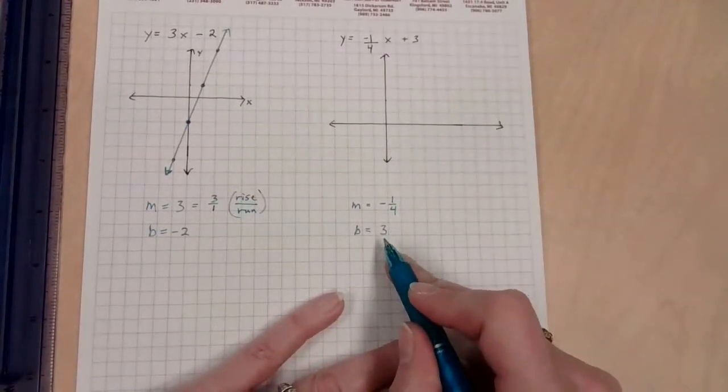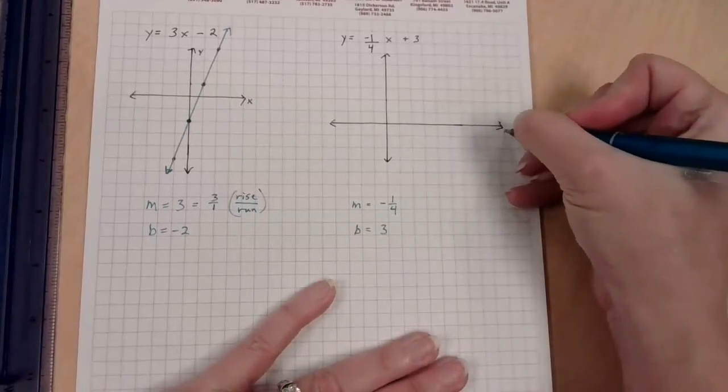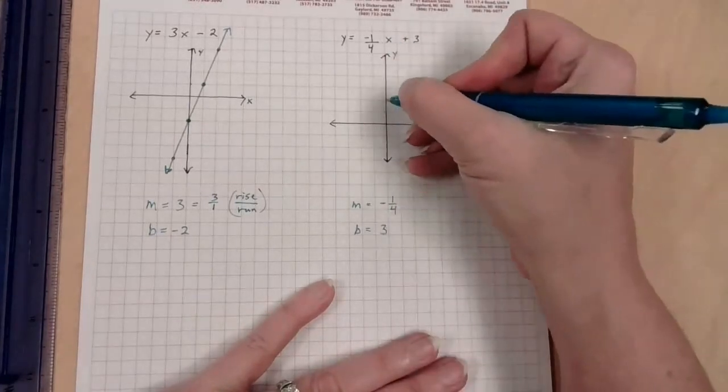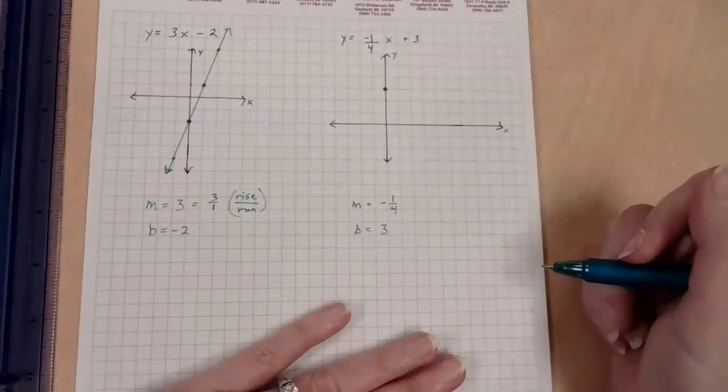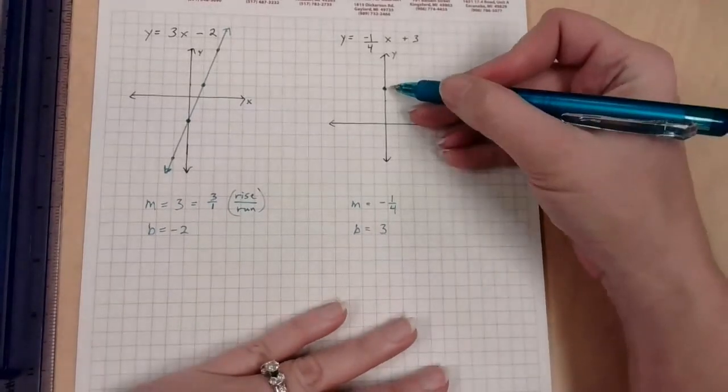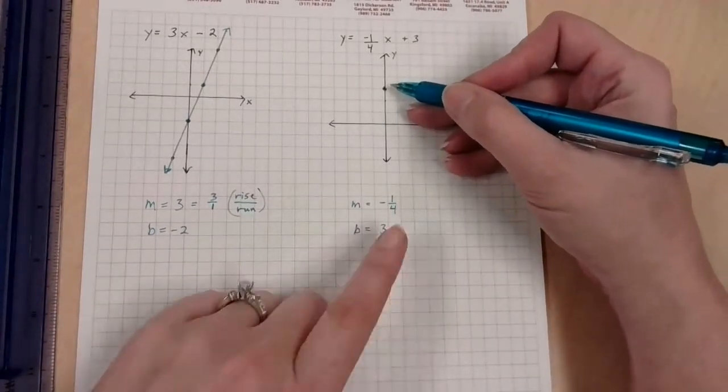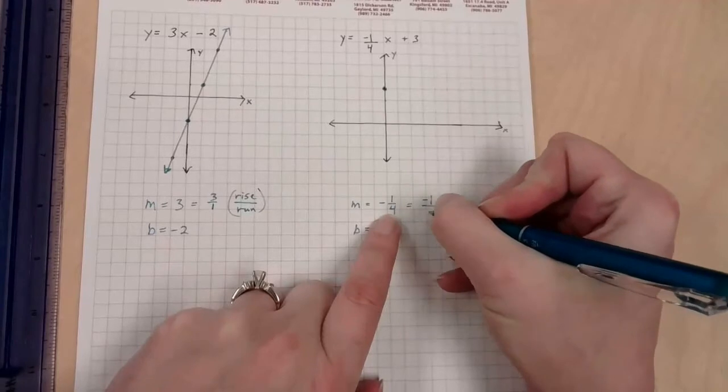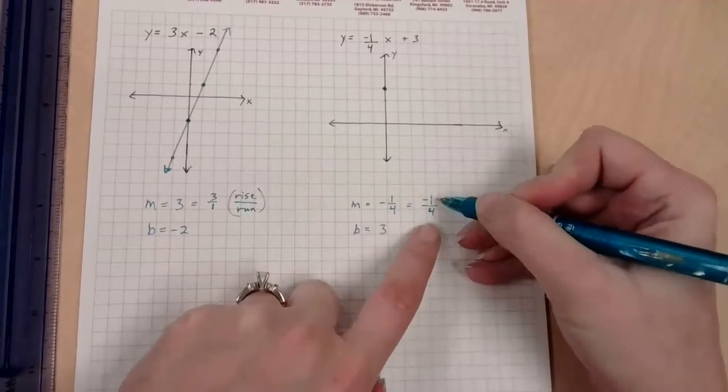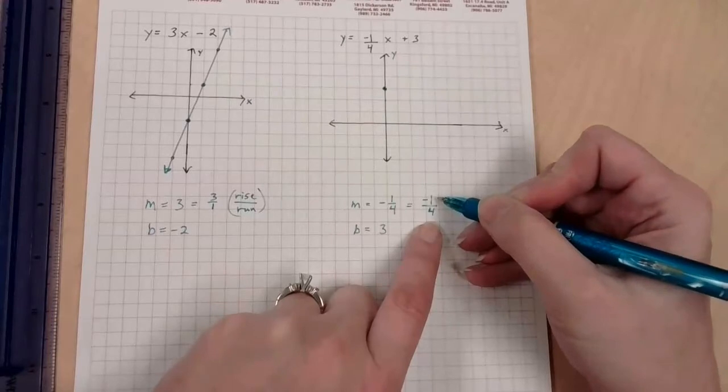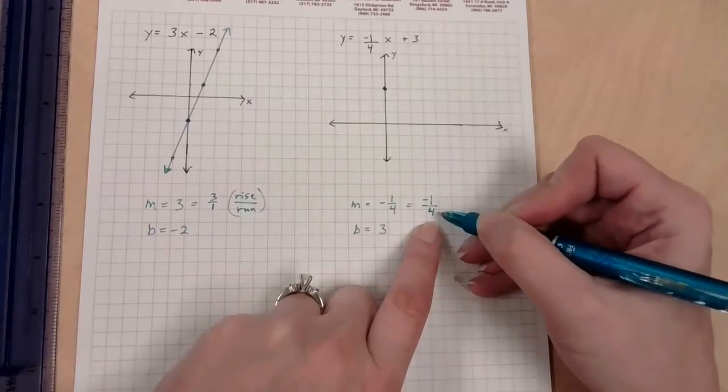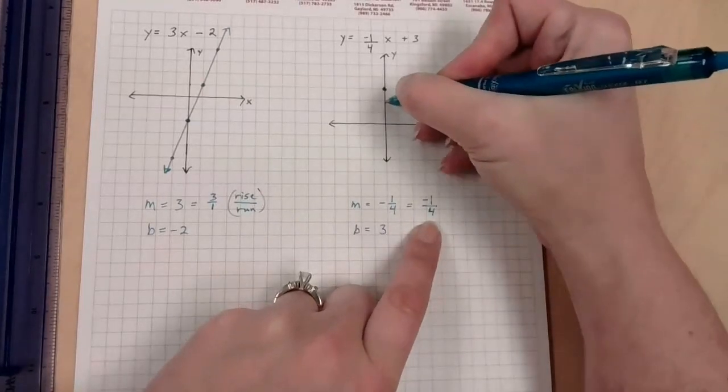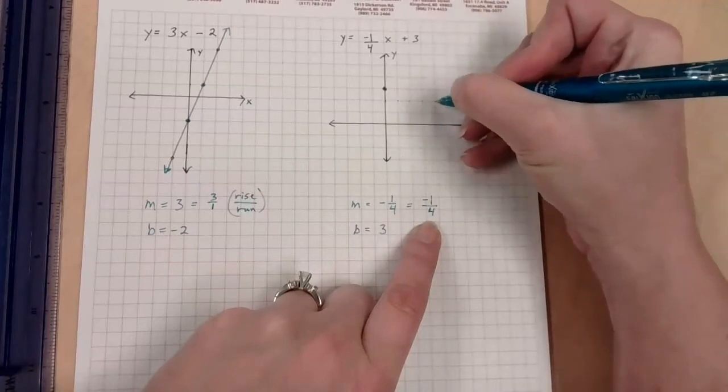This thing has a slope of negative one-fourth, and my y-intercept is a positive three. Here's x, here's y. Where is the y-intercept three? One, two, three. That point is on my line. I'm going to think of this as having a negative one for my rise over a positive four, so I'm actually going to fall one, and then I'm going to run four. One, two, three, four.